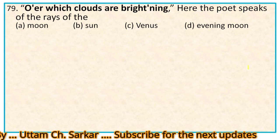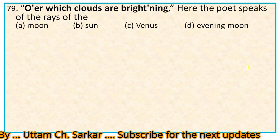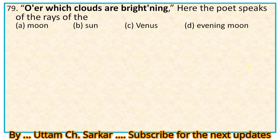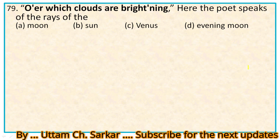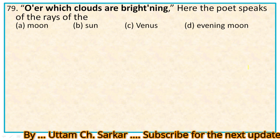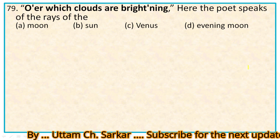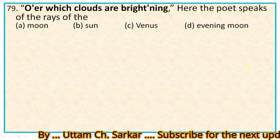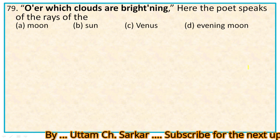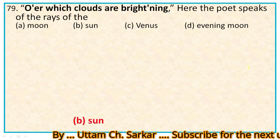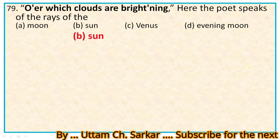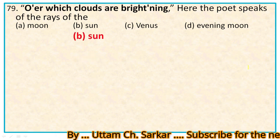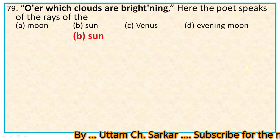Question 79: 'Over which clouds are brightening.' Here the poet speaks of the rays of — this is from stanza 3. The lines are: 'In the golden lightning of the sunken sun, over which clouds are brightening.' So the right option is the sun, because Shelley speaks of the golden lightning of the sun.